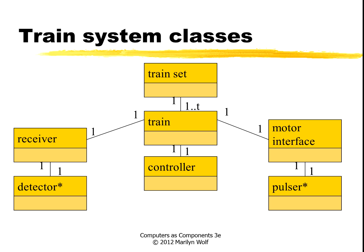We also need some classes for the trains. We'll have a class for all of the trains together on the track, and then a separate class for a single train. We can have up to T trains, where we want T to be eight. The train class has a receiver, a controller, and a motor interface. The receiver talks to the detector, which is the physical interface to the tracks. The controller takes a packet and figures out what to do. The motor interface talks to the pulsar, which is the actual physical interface to the engine.